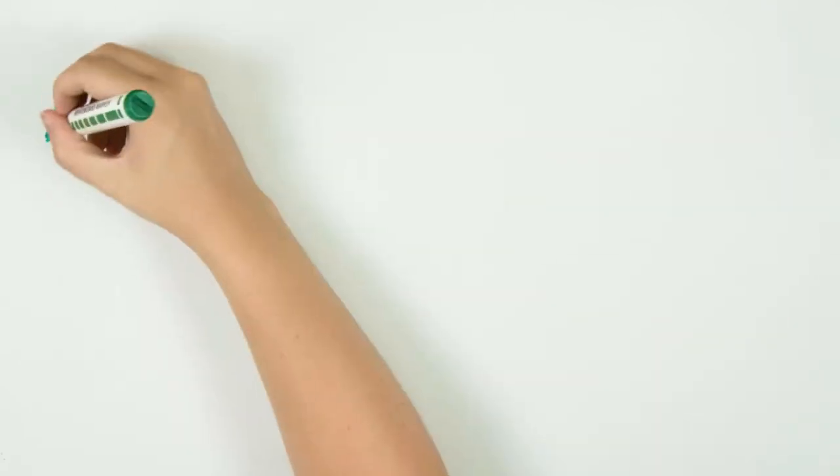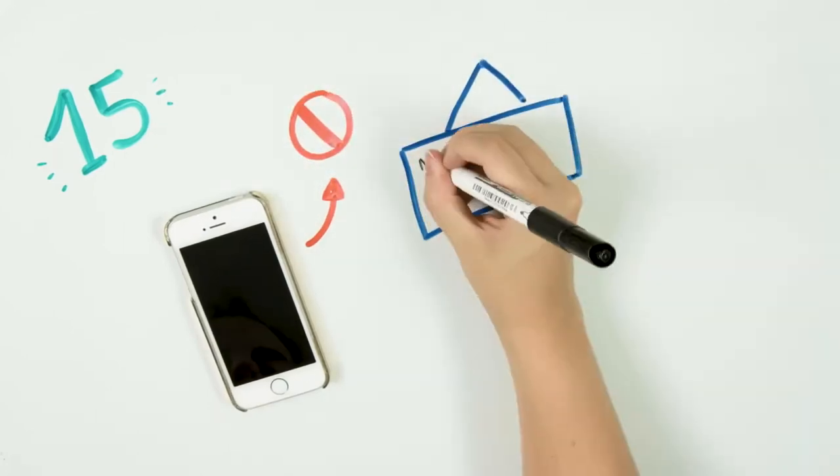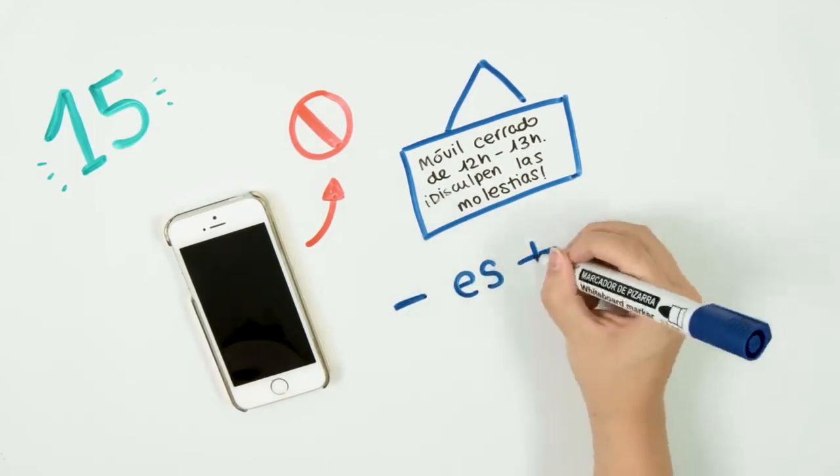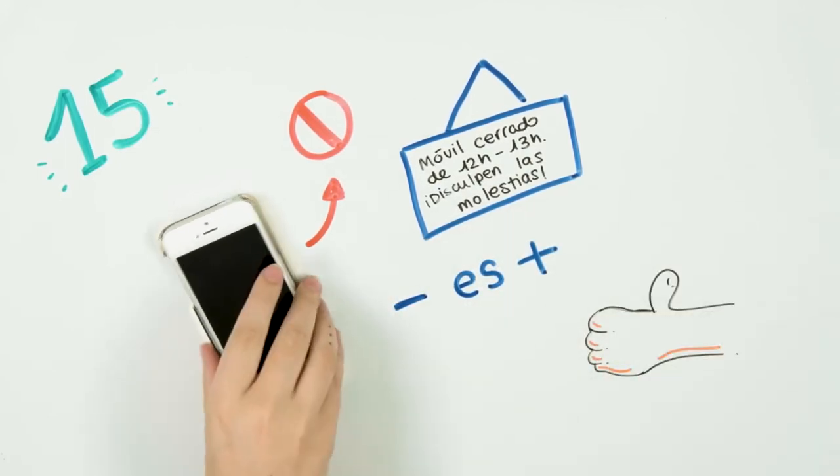Fifteenth: Practice disconnecting. We already know that the phone is one of the most important things in your life, but try turning it off from time to time, maybe while you're with a friend or just concentrating on some activity. You know it. You will see how good it feels to live without so many unnecessary stimuli.